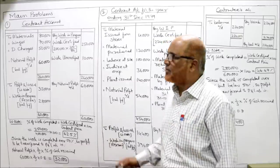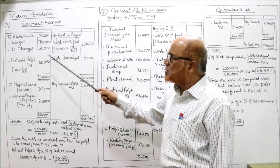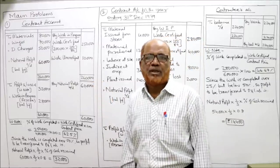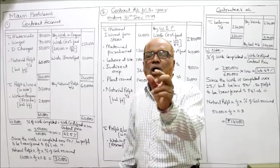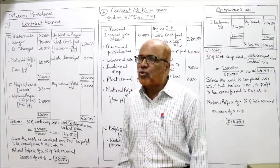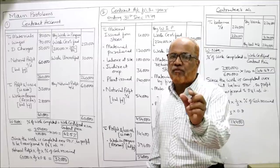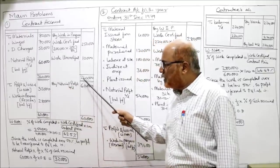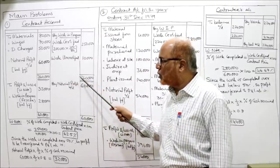Work uncertified is 10,000, given in the problem. Credit side total: 2,50,000 + 10,000 = 2,60,000. Subtracting all debit items — 80,000, 70,000, and 50,000 — the balancing figure is the notional profit, which is 60,000. This is called notional or imaginary profit. Since the contract is not complete, a part of the notional profit goes to P&L account and the rest to reserve. Notional profit carried down and brought down: 60,000.